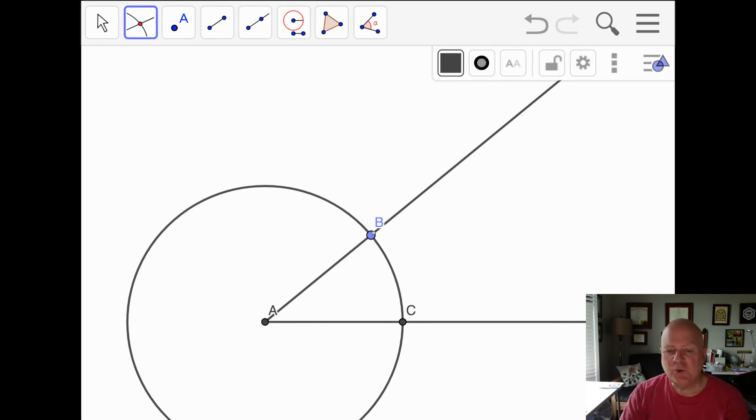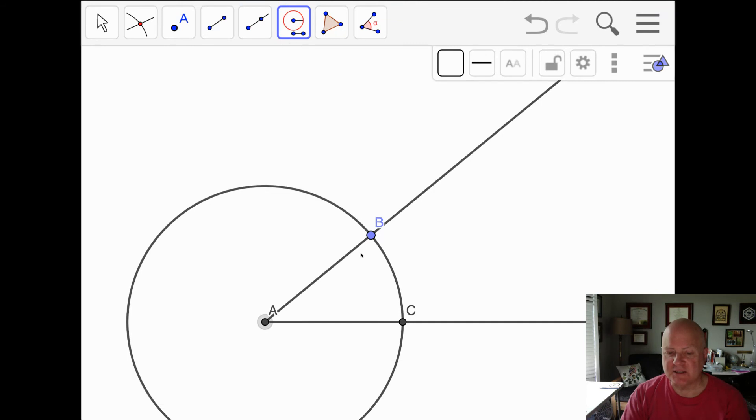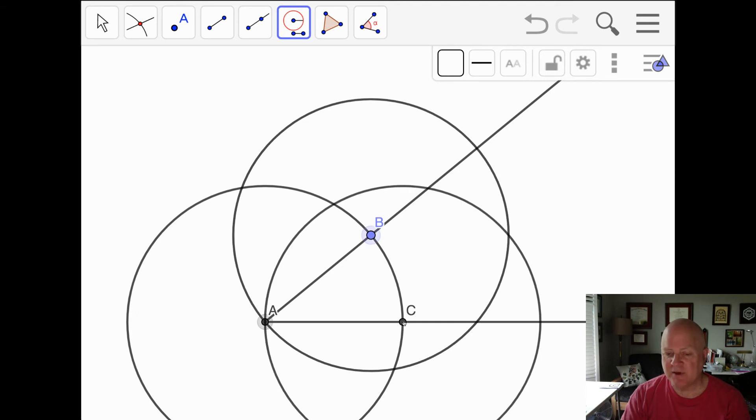Now I need two more points that are the same distance from B as they are from C. So I'm going to use my compass tool and I'll take the same radius A, B, and I'll put my center at B. I'll use that same radius A, B, and I'll put my center at C.